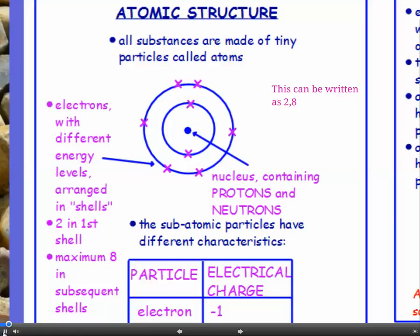And then we have electrons, with different energy levels, arranged in shells. We have a maximum of two electrons in the first shell, the innermost, and a maximum of eight in all subsequent shells. And it fills up from the innermost shell outwards.